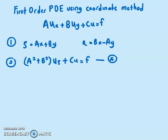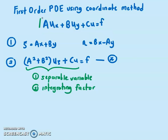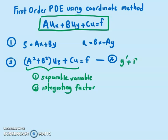The idea of the coordinate method is to transform the PDE into an ODE where it has only one independent variable, and then you can use any other method to solve it, such as separable variables or integrating factor. So we want to reduce this PDE — it currently has two independent variables X and Y — to something like the starred equation, where the only independent variable is Psi, making it look like a first order ODE.